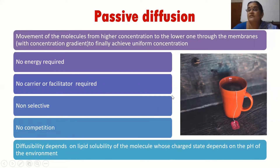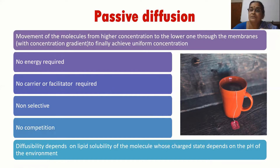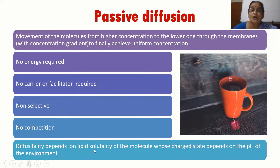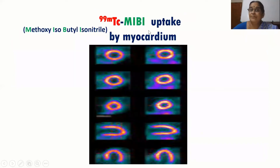The example of a tea bag shows how the flavor diffuses into water through the porous bag while the tea leaves remain inside. Similarly, molecules that can pass through the porous membrane diffuse into the liquid. This diffusibility depends on the lipid solubility of the molecule and its charged state, which depends on the pH of the environment. The example is 99m technetium MIBI uptake by myocardium for myocardial perfusion assessment.